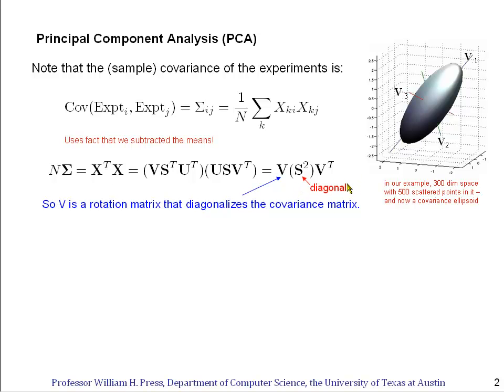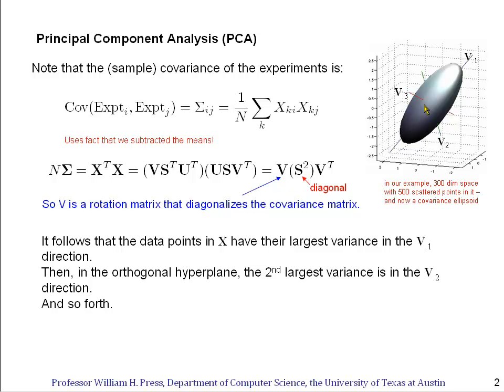If we view our data as being approximated by some multivariate normal distribution in 300 dimensions because there are 300 different experiments, then V is the rotation matrix. The columns of V are the principal axes of that multivariate normal approximation. The data points X have their largest variance in the v1 direction because s1, the first singular value, is by definition always the largest one, and the second largest variance in the v2 direction, orthogonal to v1, and so forth.